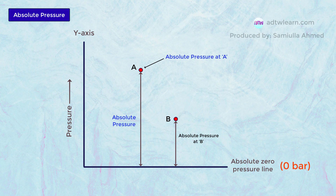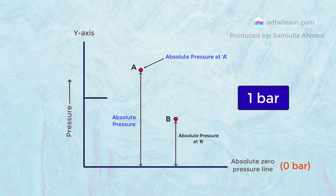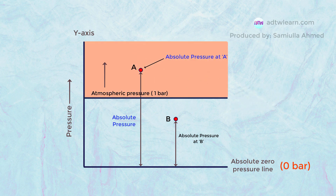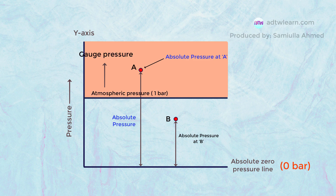Normally, the pressure around us in the atmosphere is around 1 bar. This line represents atmospheric pressure. And if we measure any pressures above this atmospheric line, that pressure will be called gauge pressure. This is because the gauges used to measure pressure measure from the atmospheric pressure. Therefore, the pressure measured above this atmospheric pressure line is called gauge pressure.